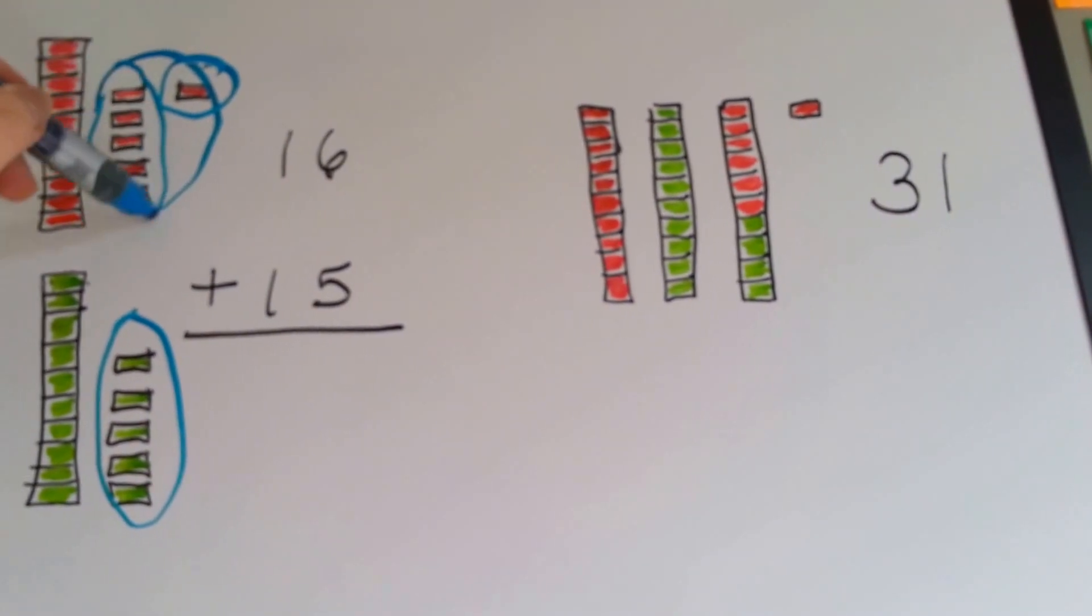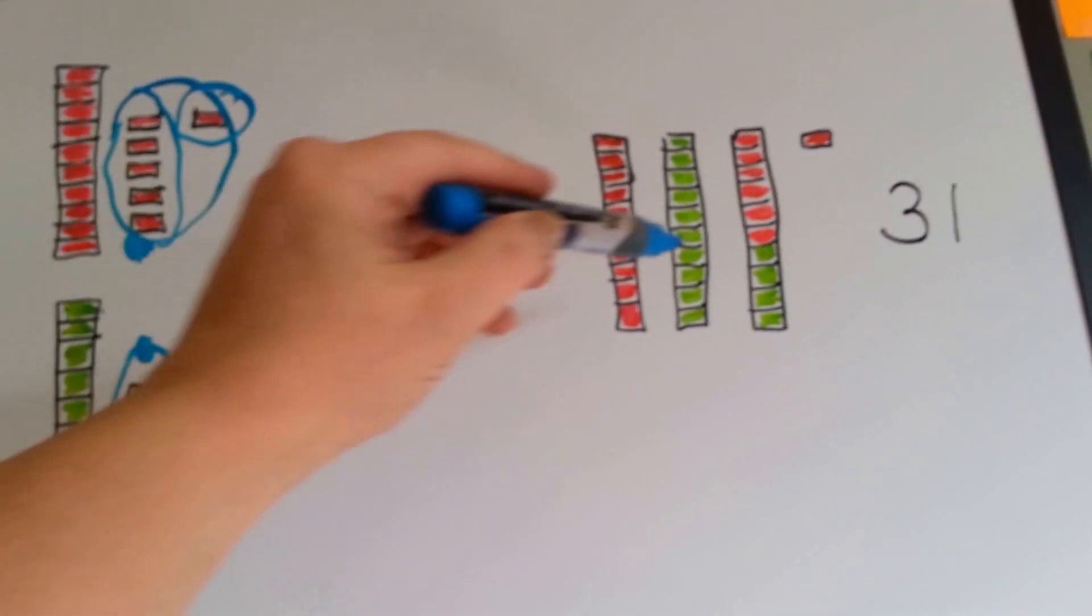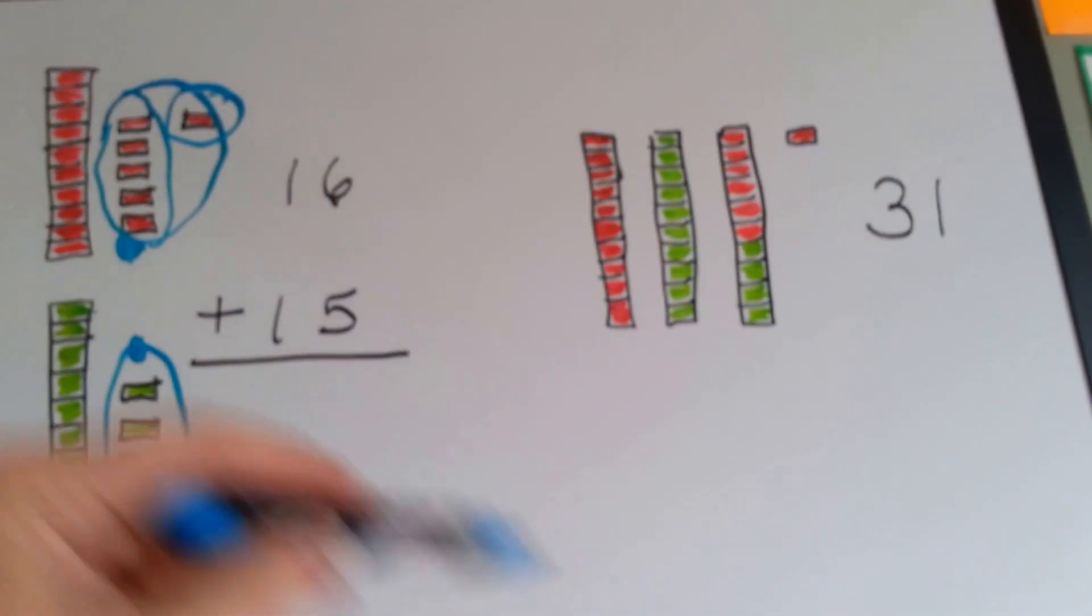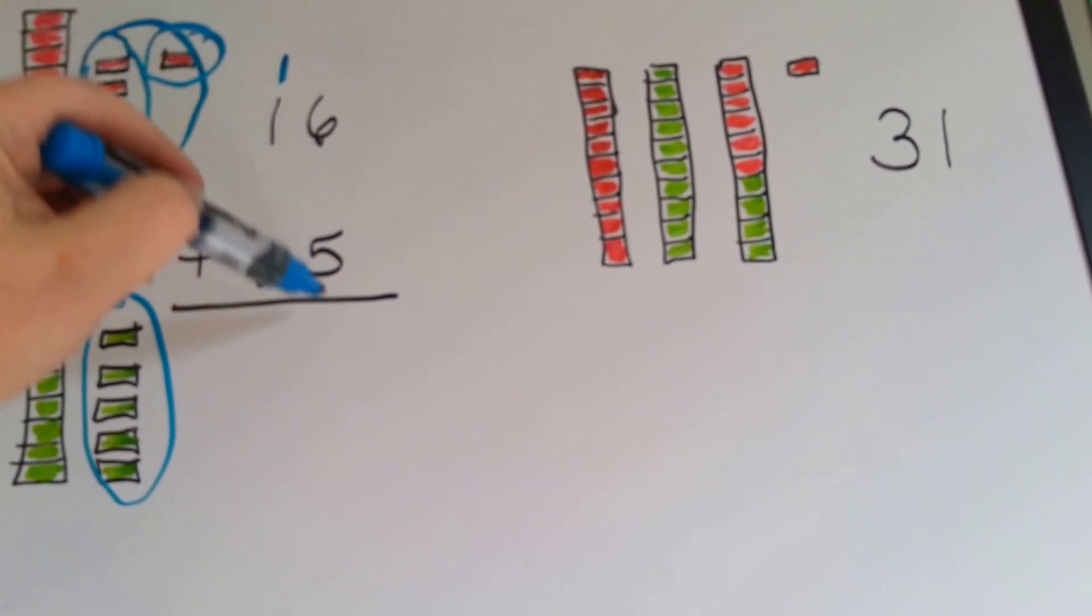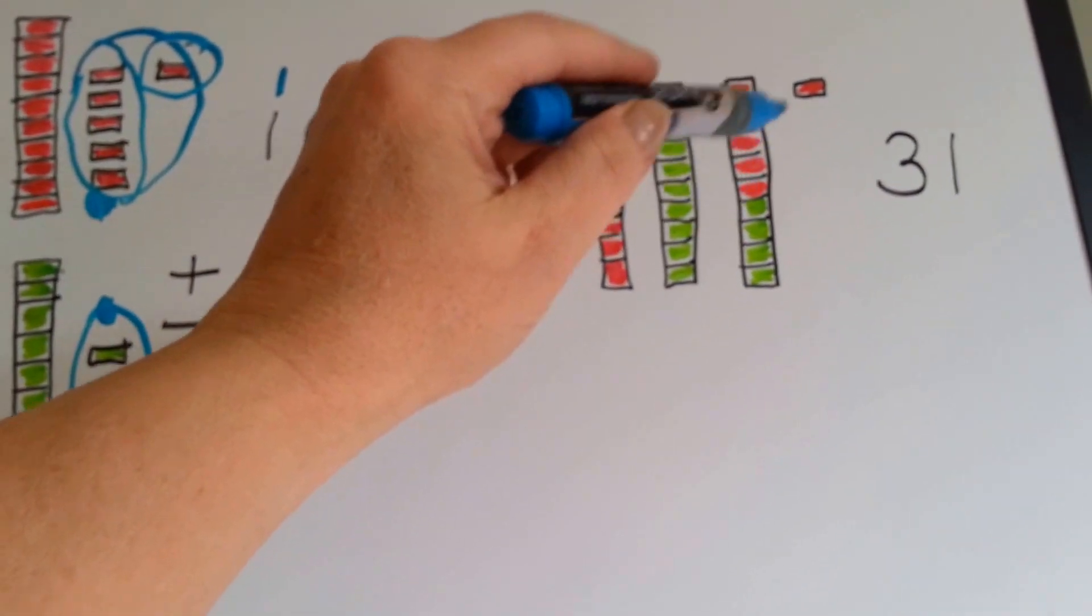So by taking this group of 5 and this group of 5, we made a new bar of 10, and we've regrouped them. 6 plus 5, we carry the 1, we put the 1 down, that makes the 11, 10, 11.